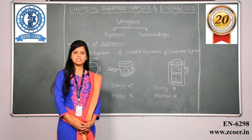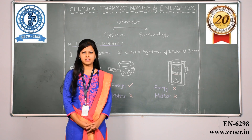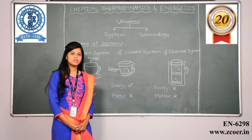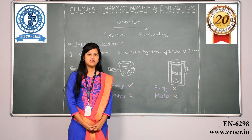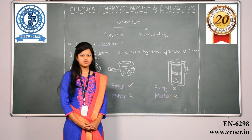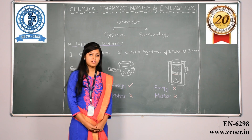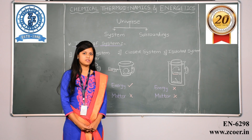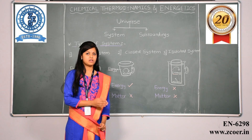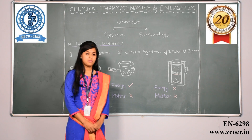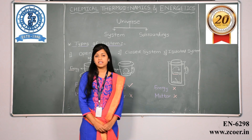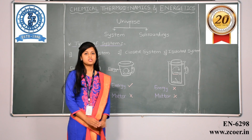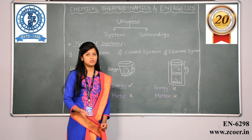Hello, today we will see chapter 3 which is chemical thermodynamics and energetics. There are different forms of energy like kinetic energy, potential energy, heat energy, etc. Now these forms of energy are interconvertible and can be converted from one form to another, but one important point is that energy can neither be created nor be destroyed. They can be just converted from one form to another.